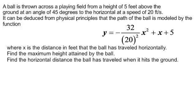A ball is thrown across a playing field from a height of 5 feet above the ground at an angle of 45 degrees to the horizontal at a speed of 20 feet per second.